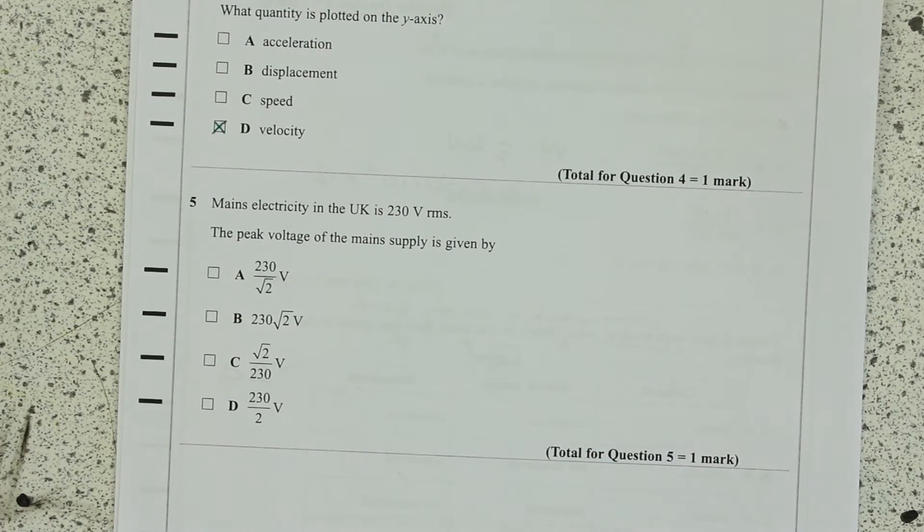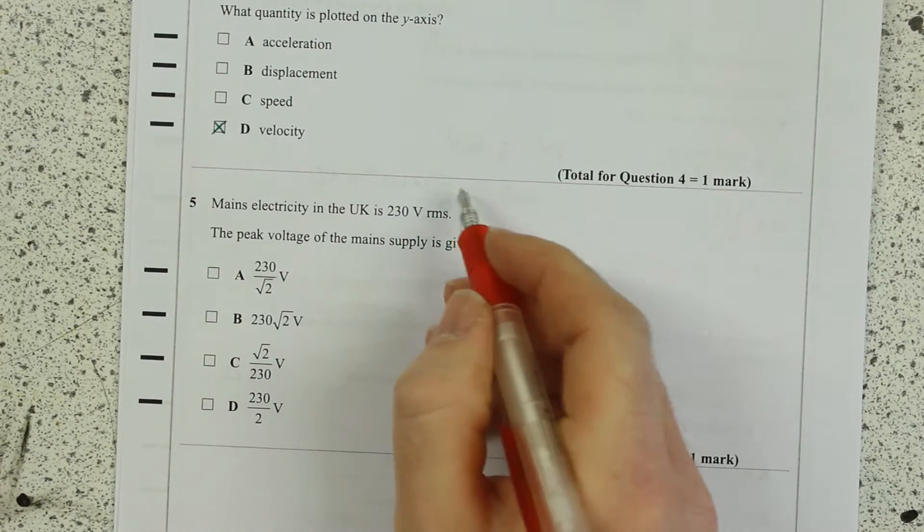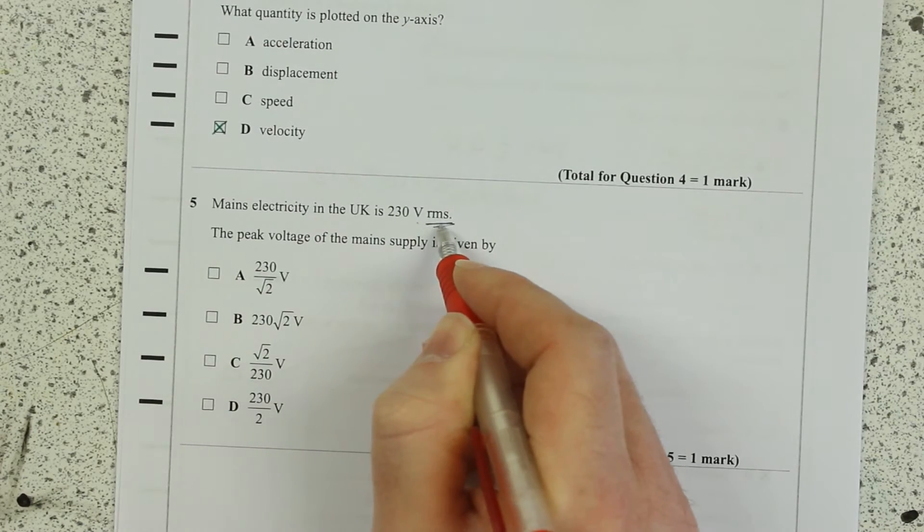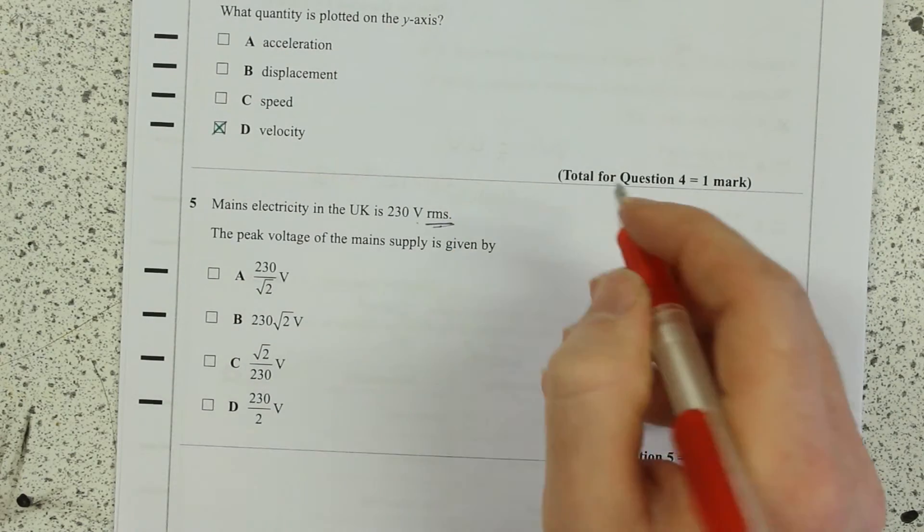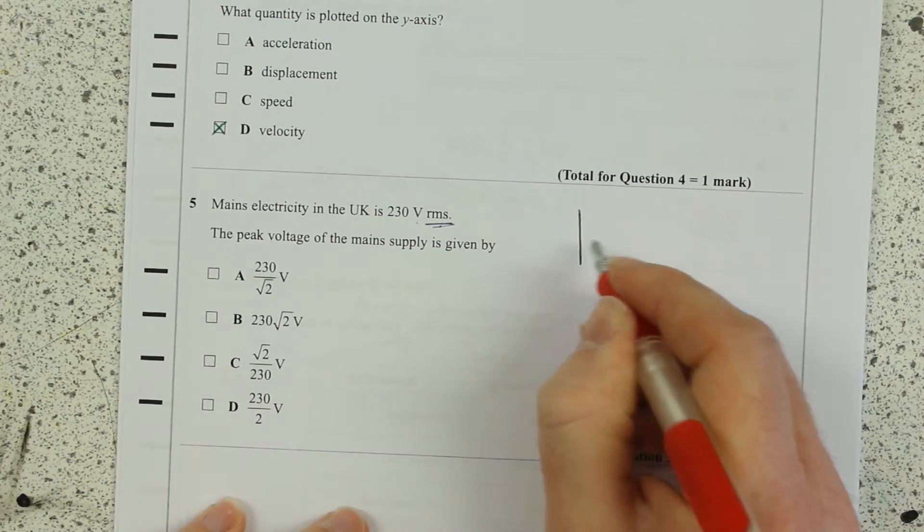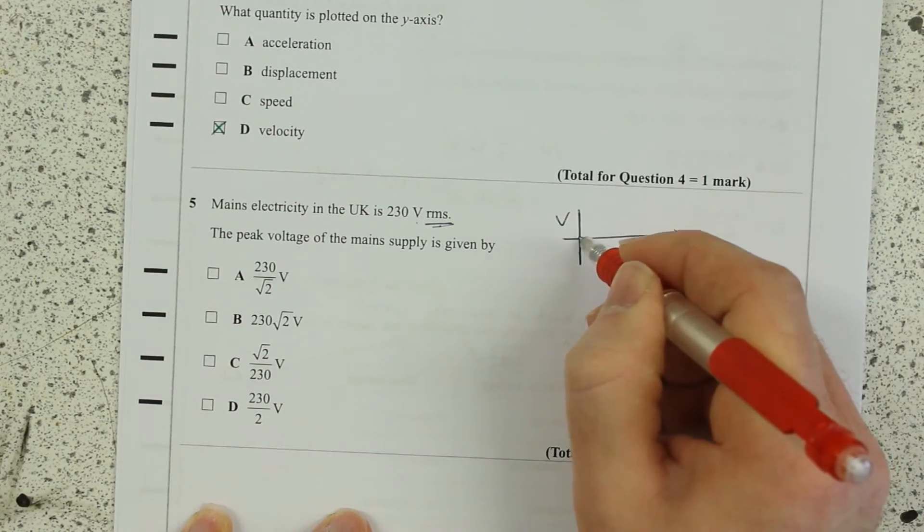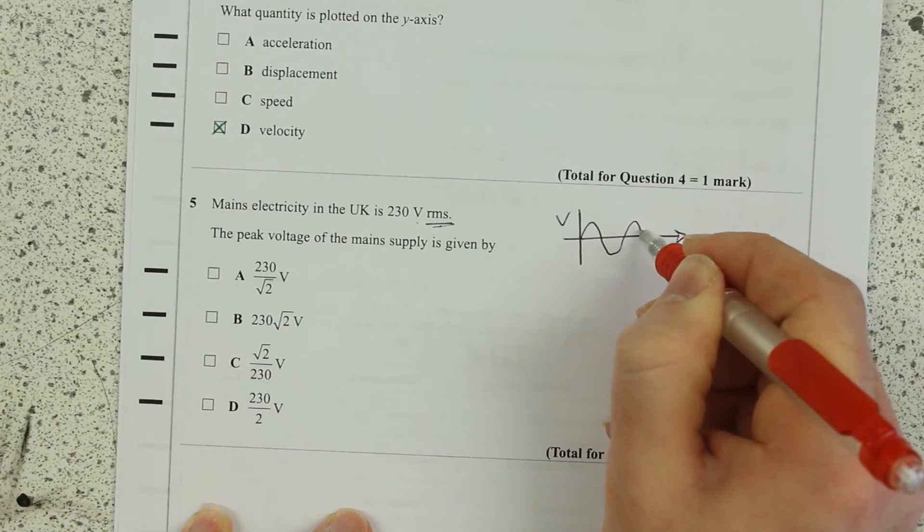This question is a new one. It's thinking about the term 230 volts RMS voltage. So we quote 230 volts as being the root mean square voltage, and as you know, mains voltage is AC.